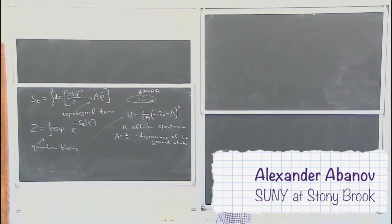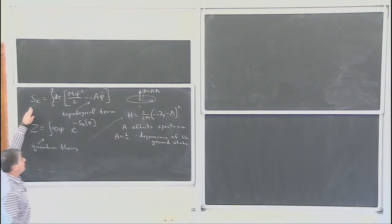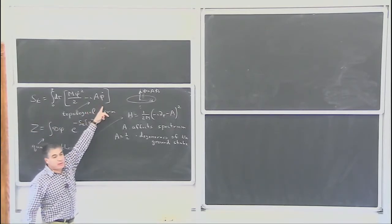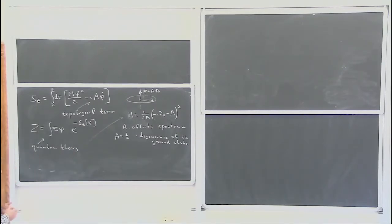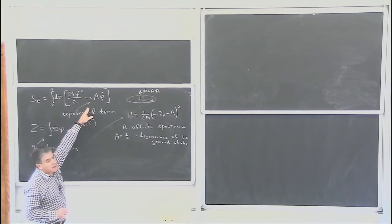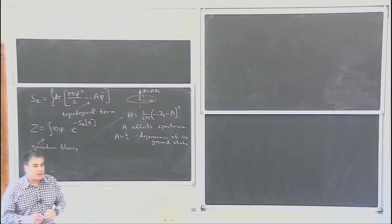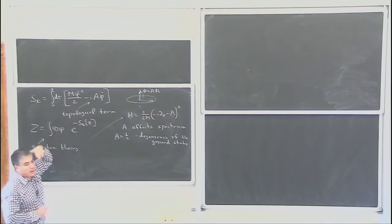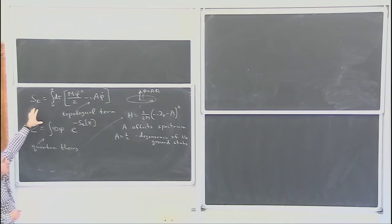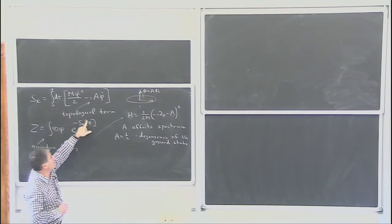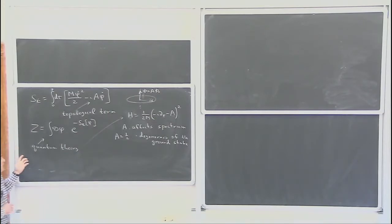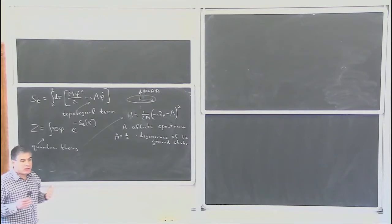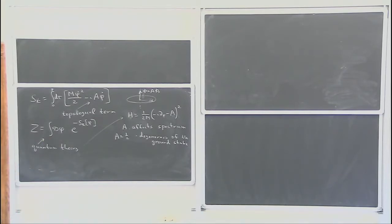Let me recap what we did last time. We considered the Euclidean inversion of the action of a particle on a circle with a full derivative term, which classically is unobservable as it doesn't affect equations of motion. After Wick rotation — going to imaginary time — we have this term with an imaginary unit in front. It's a topological term because it doesn't depend on the parameterization of time. The quantum version considers the partition function weighted by this action, and the weight corresponding to the topological term is a phase. As a result, this term leads to interference between different topological sectors — they can actually cancel each other.